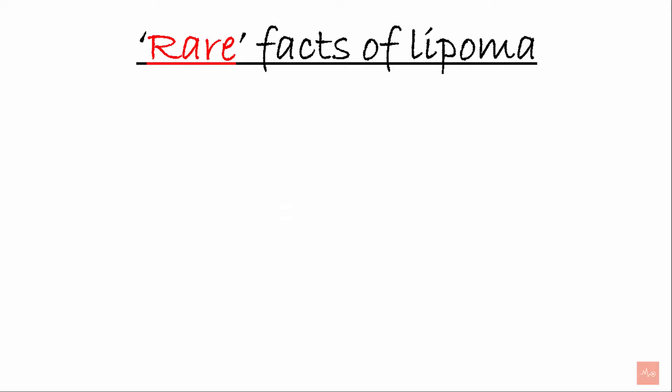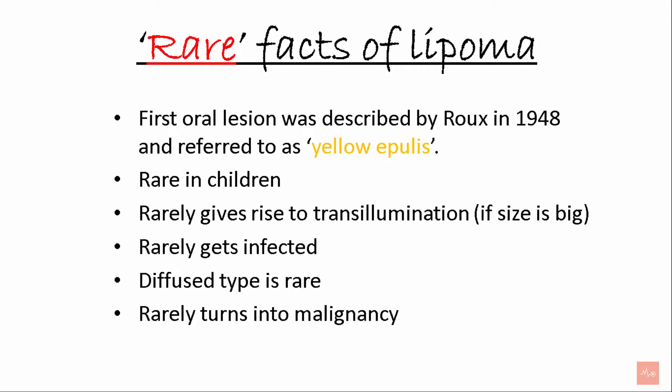Rare facts of lipoma: the first oral lesion was described by Roux in 1948 and was referred to as yellow epulis. It is rare in children. It rarely gives rise to transillumination. It rarely gets infected. The diffuse type is rare, and lipoma rarely turns into malignancy.